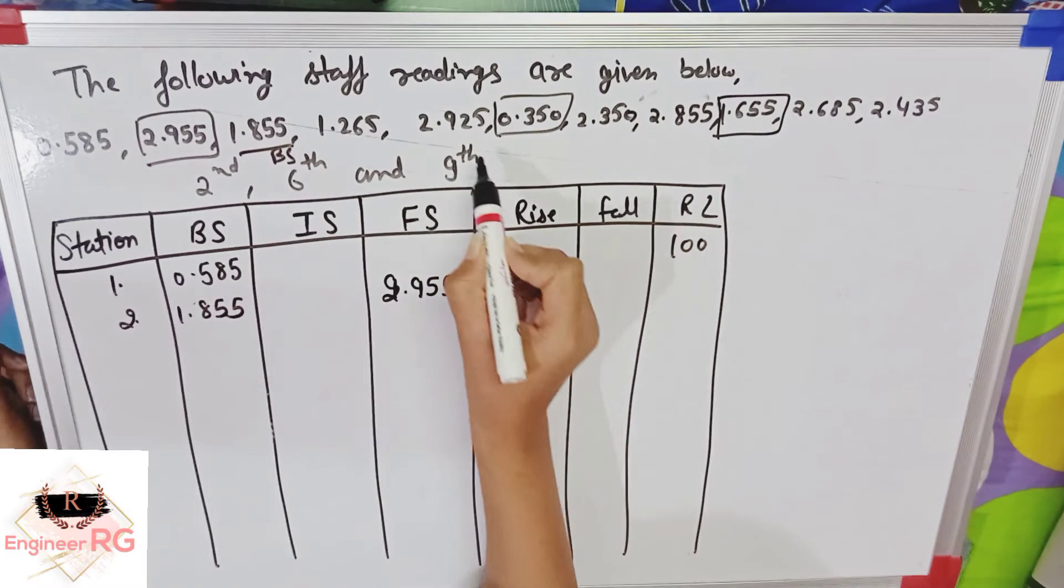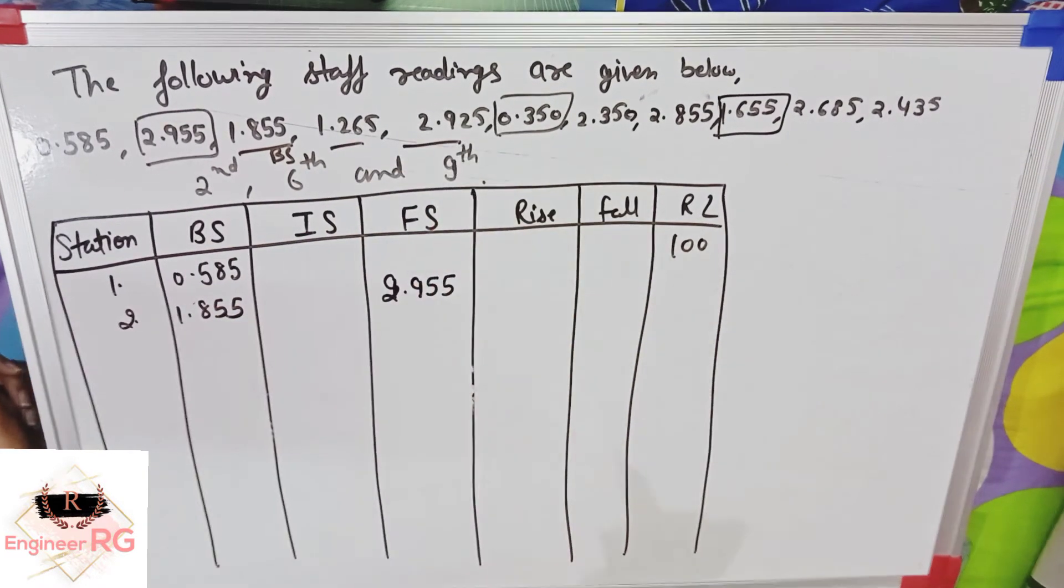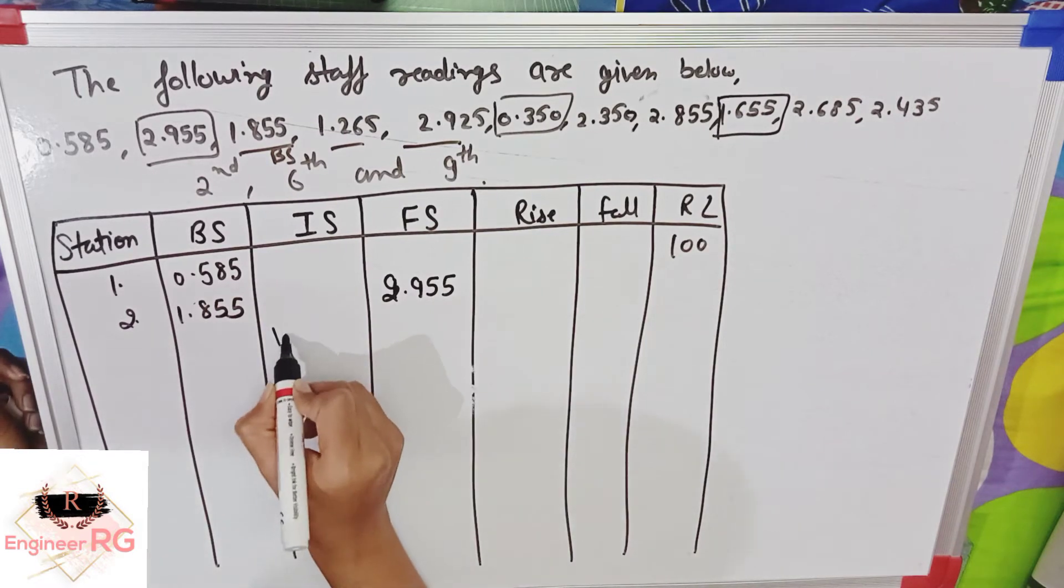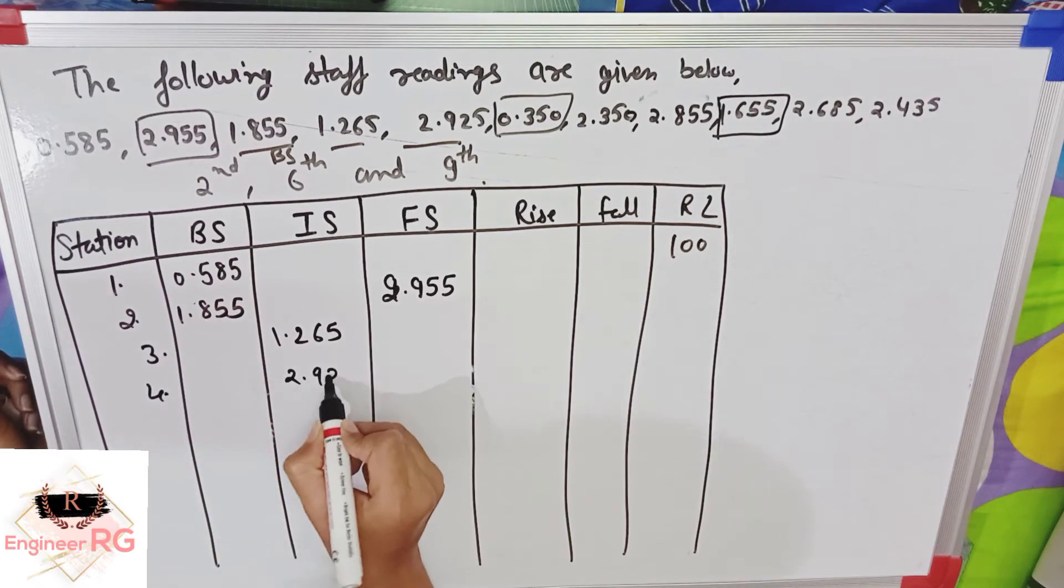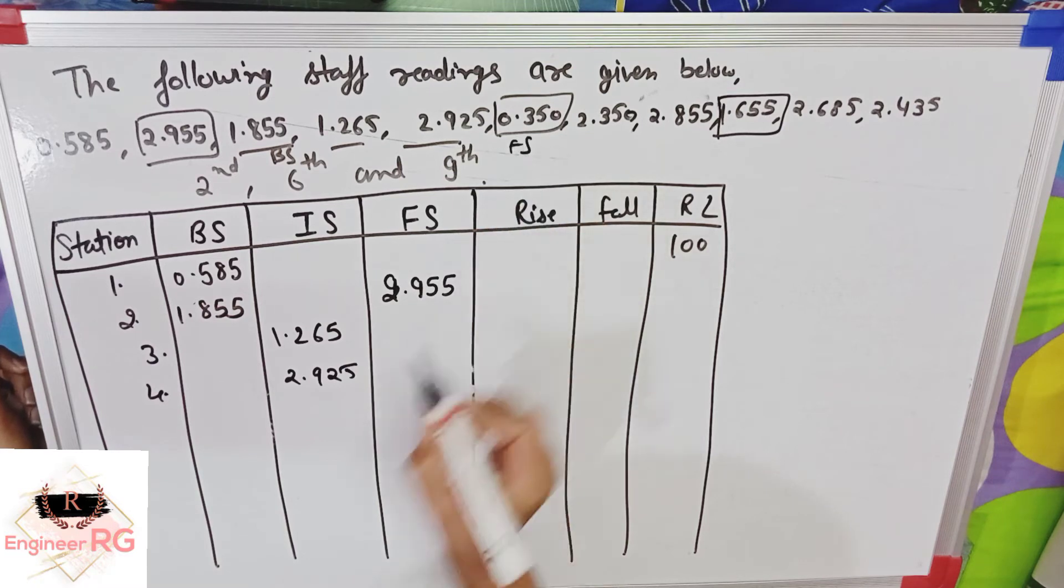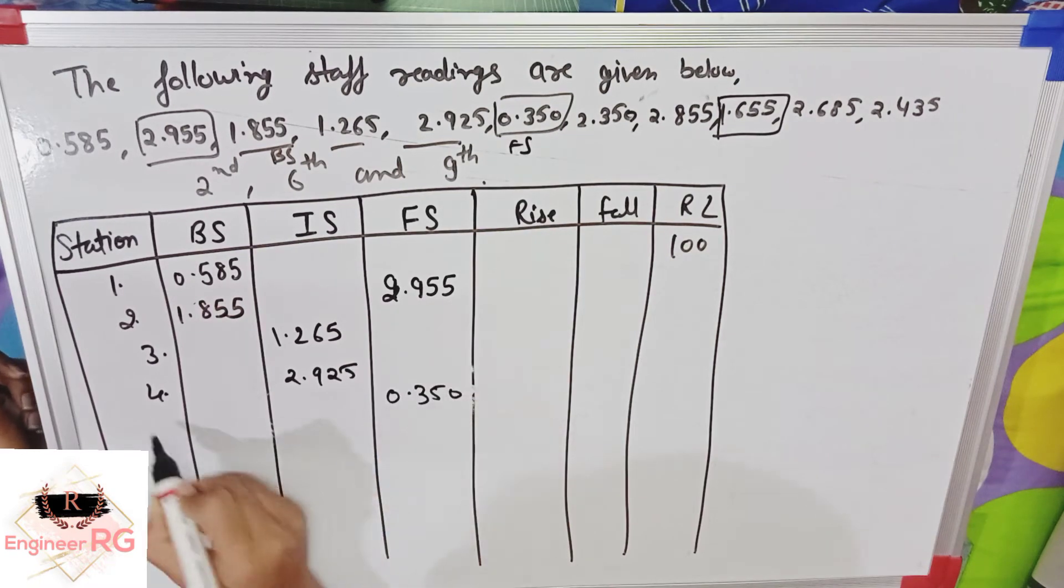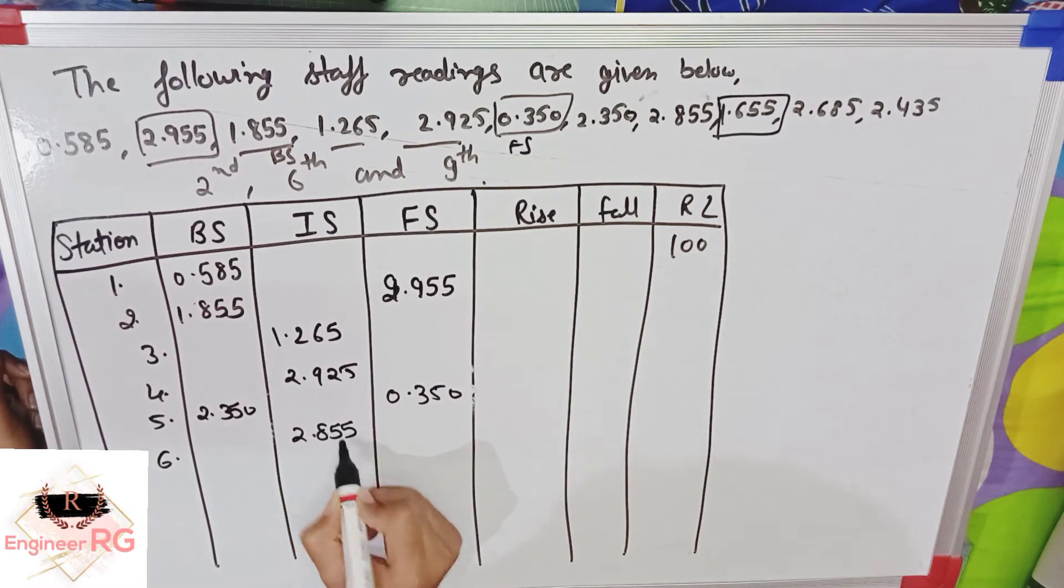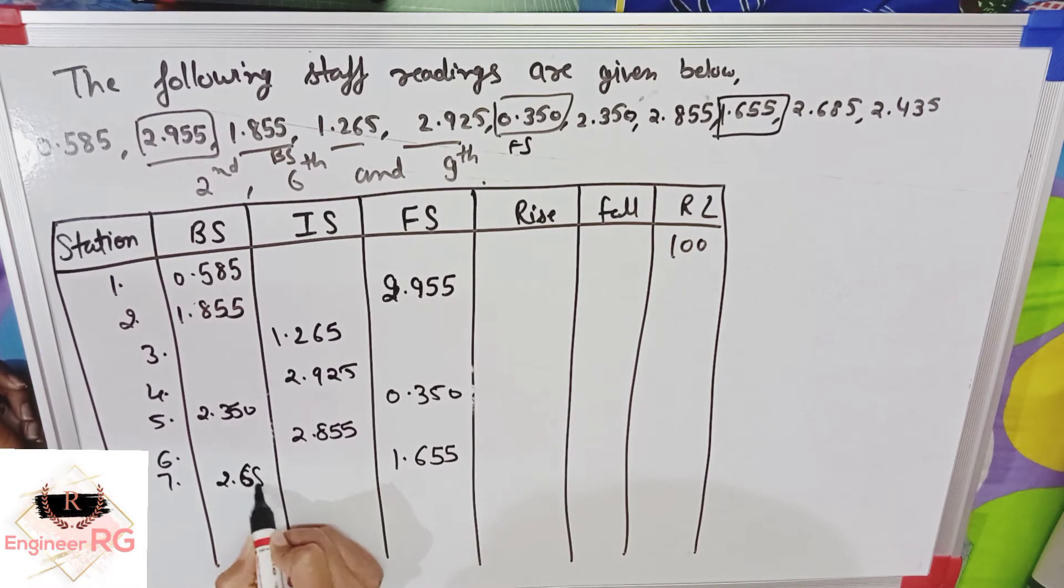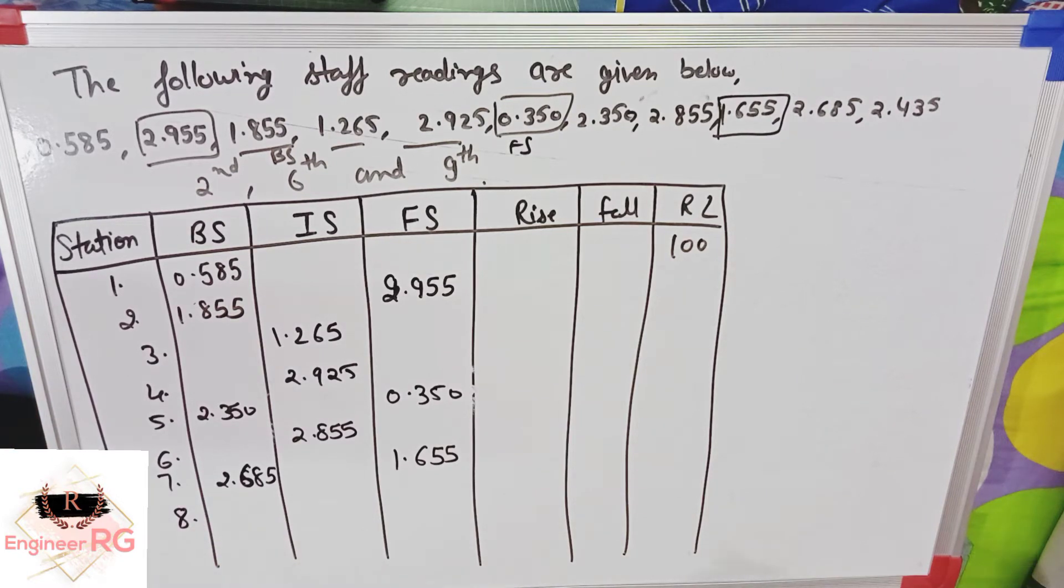Back-side and fore-side are called intermediate-side. Then, we will write intermediate-side. Then, fore-side. So, 0.350 is in fore-side. Now, the reading is just back-side. After this, fore-side. Then, fore-side, then back-side. And the last reading is always fore-side. So, the last reading is always fore-side. I put the last reading in fore-side.